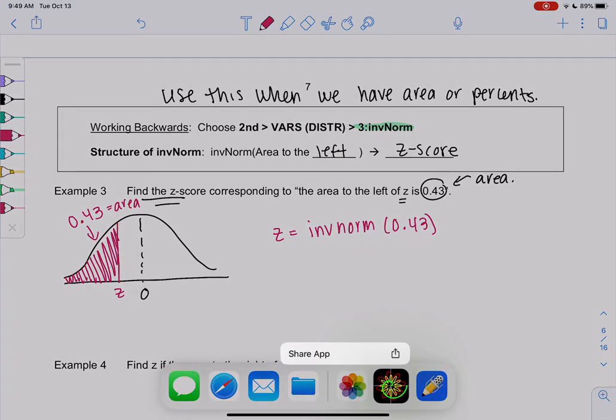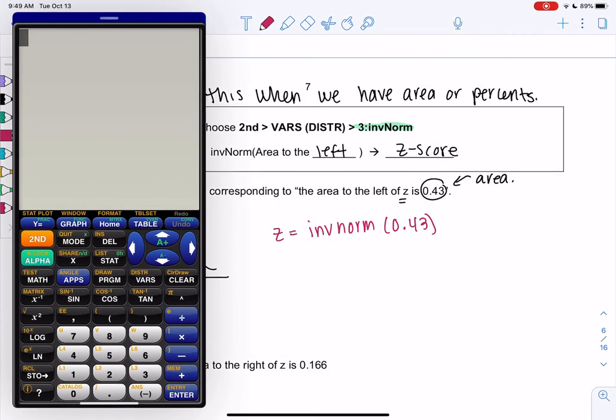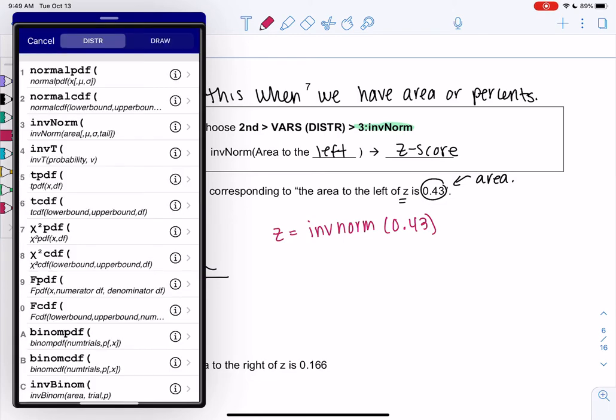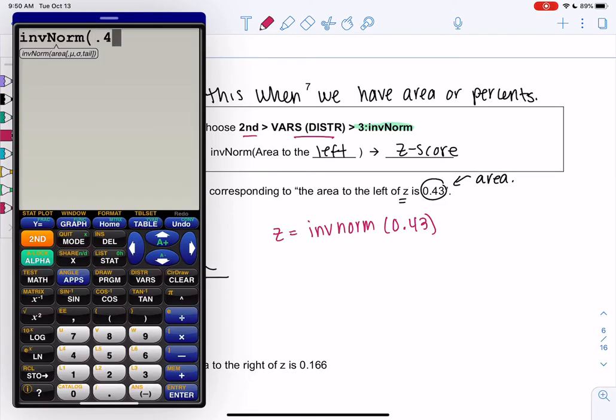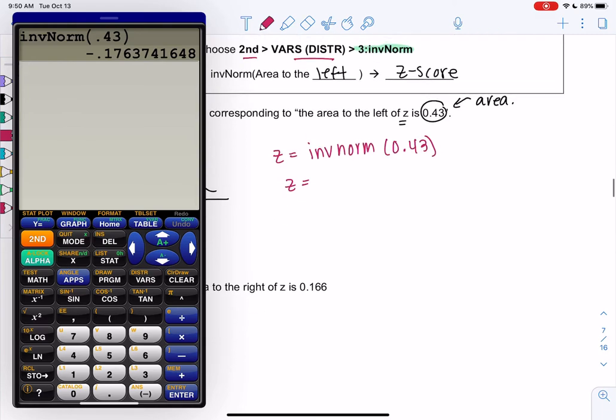It'll be in that exact same menu. Second distribution. And then inverse norm should be the third one down. And you only type one number, because it's only area to the left. There's not a lower and an upper anymore. So my z-score is negative 0.176.